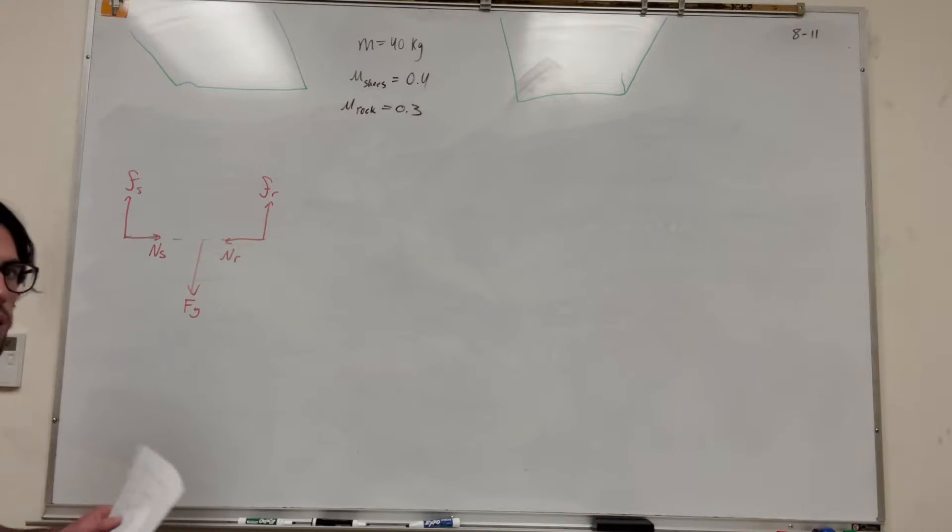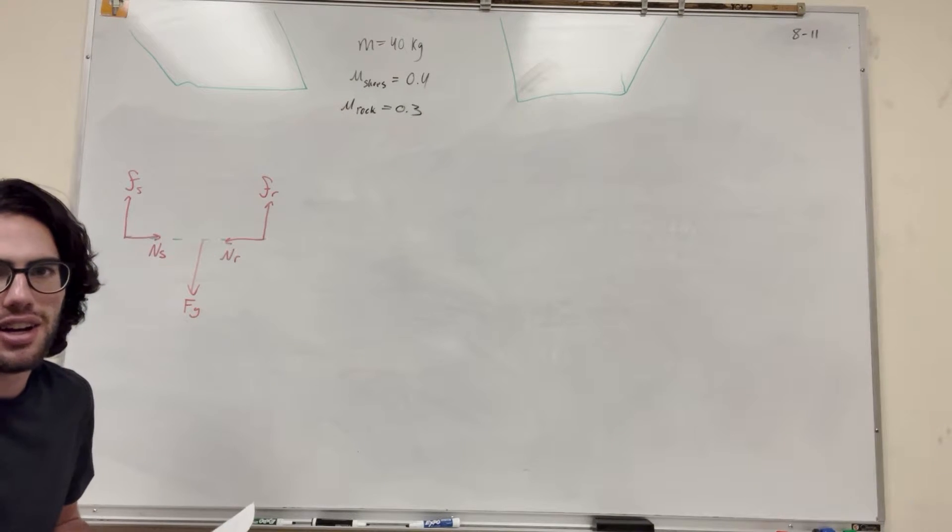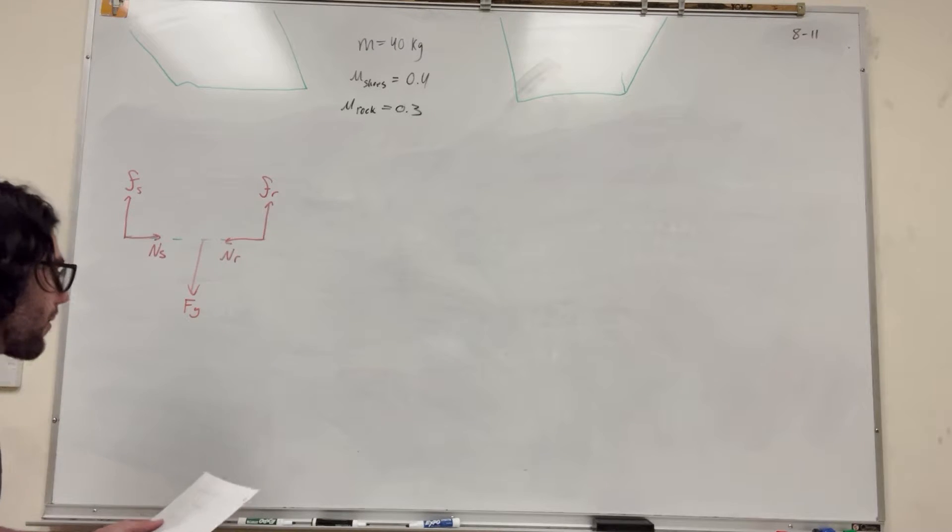And then this is friction of the shoes. So there you go. So this is our free body diagram. We don't have any distances, which is going to be fine. We don't need them. So how are we going to solve this, right?